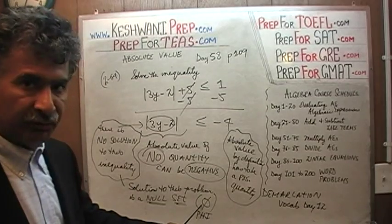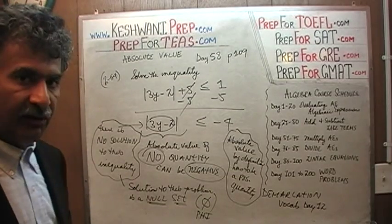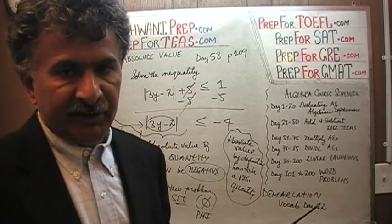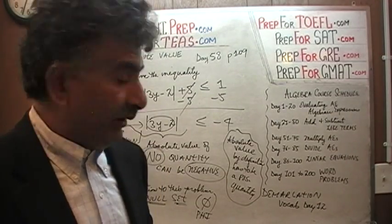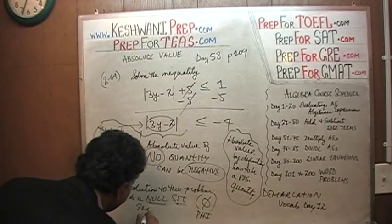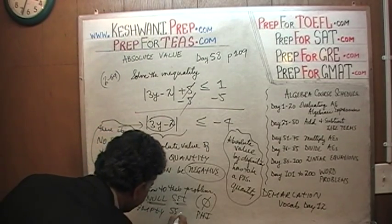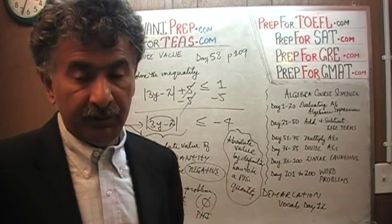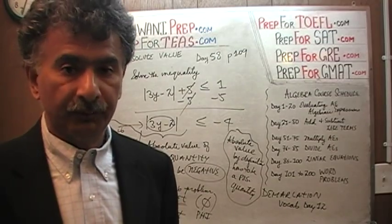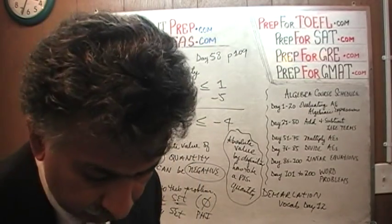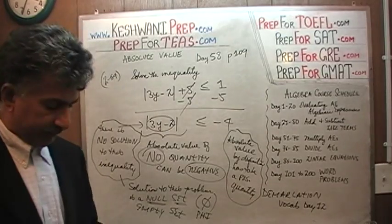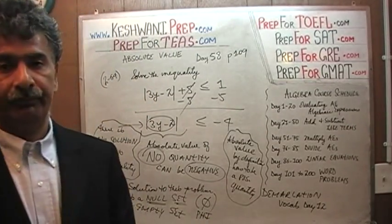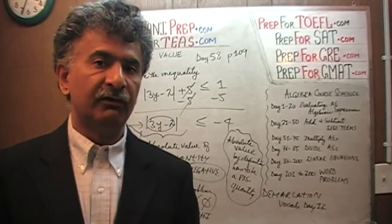That's the letter we use traditionally to represent a null set. Null set means that set has no members — there is nothing in it. Null set means empty set. If it's empty, that means there is no solution, because if there had been a solution, we would have presented it in the solution set. That's it — it has no solution. The solution to this problem is a null set, which is a very awkward way of saying there is no solution. The solution set is phi.